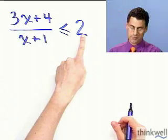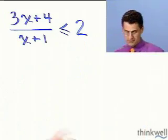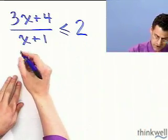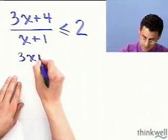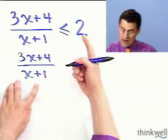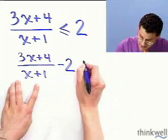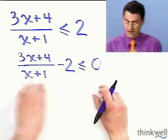So what I'll do is I'll actually bring this over to the other side and have the 0 on the right. Let me do this here for you. So this would look like 3x plus 4 divided by x plus 1. But now I'm going to subtract a 2 from both sides. So I've got a minus 2, and that's less than or equal to 0. So there's the happy 0 I wanted.